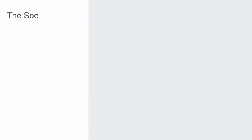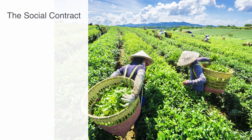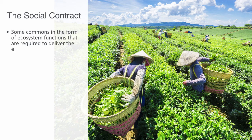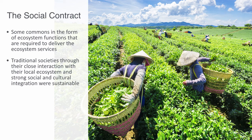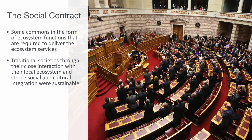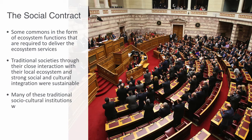In the relationship between a society and its ecosystem, there is invariably going to be some commons in the form of ecosystem functions required to deliver ecosystem services — such as clean water so that people can go fishing, or clean air. These are most effectively managed through social and cultural frameworks of coordination. Traditional societies, through their close interaction with their local ecosystem and strong social and cultural integration, were able to live sustainably for prolonged periods using traditional social institutions to manage the commons. With the industrial revolution, many of these traditional socio-cultural institutions were disintegrated, and the modern nation-state became the new form of social contract.